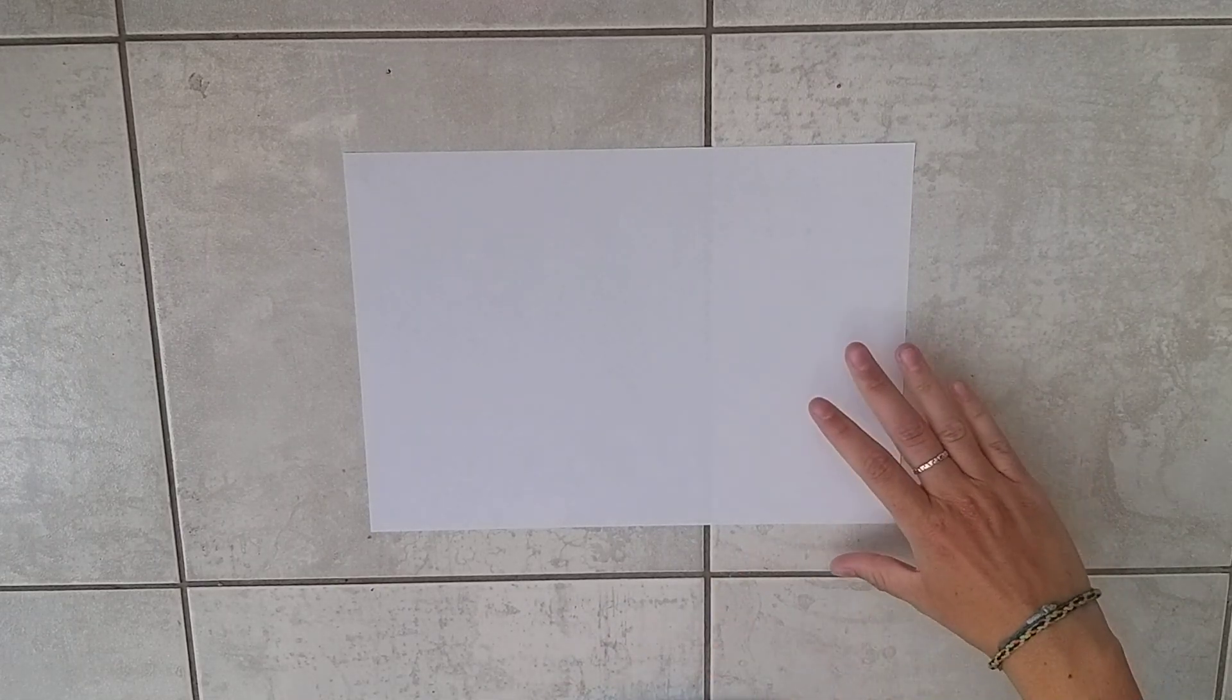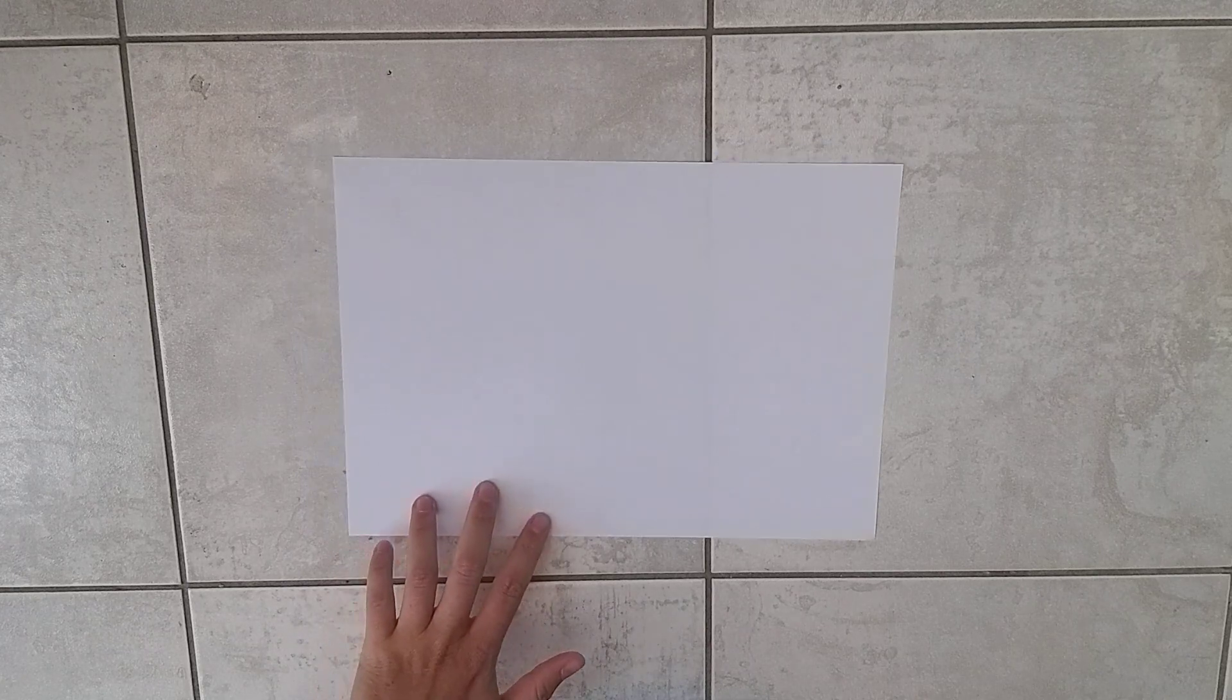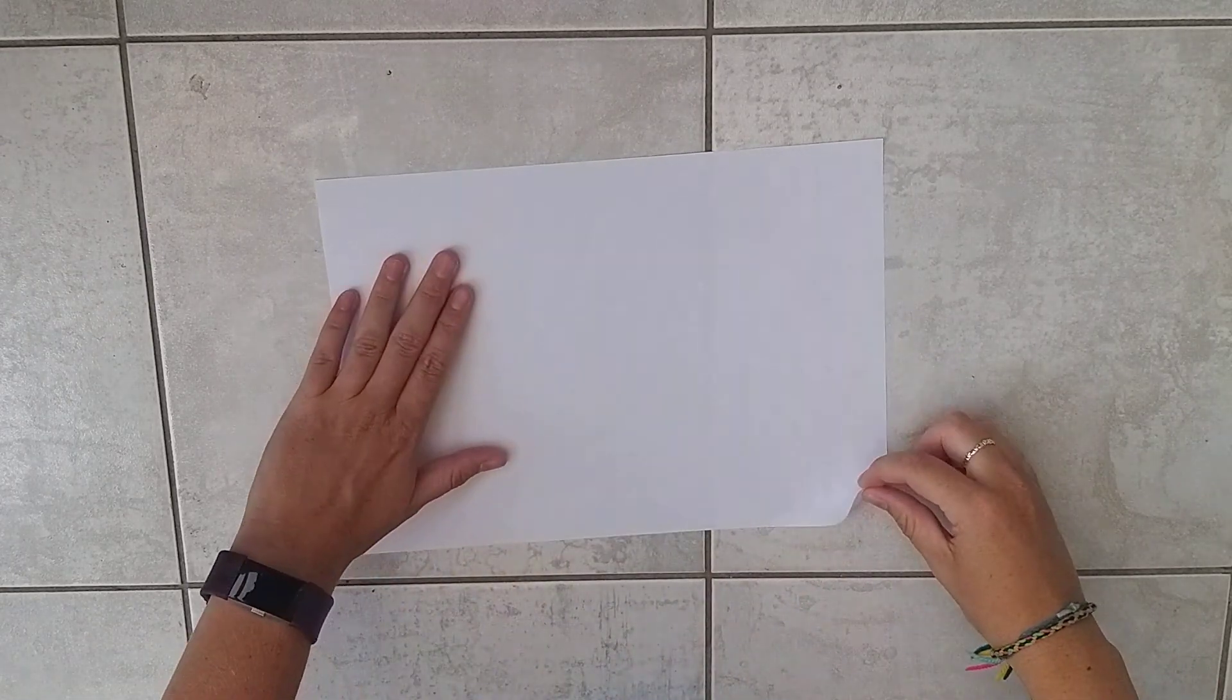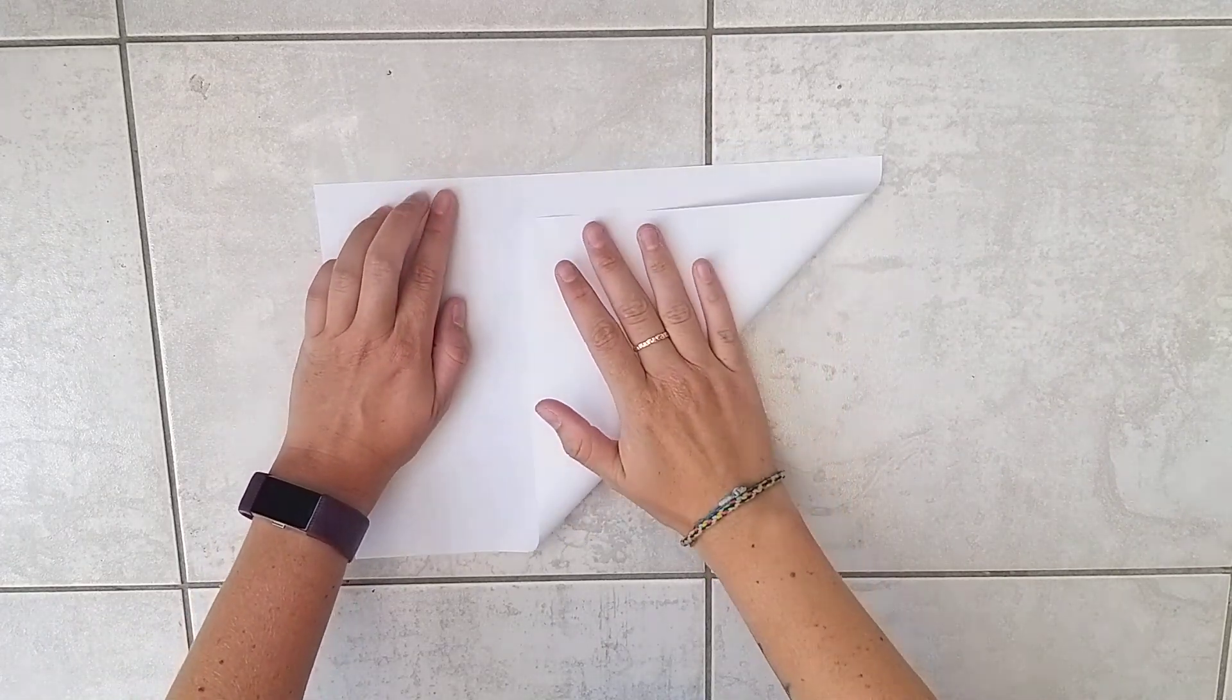This is how we're going to make our movie picker. First of all, we need to make our paper into a square shape. What you do is fold the corner, pick this corner, and you want to meet it with this edge.